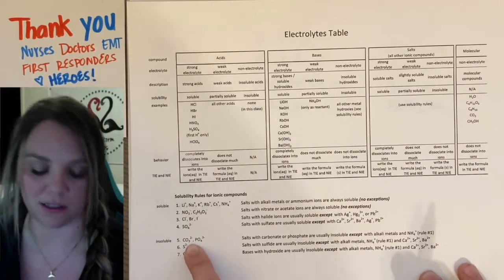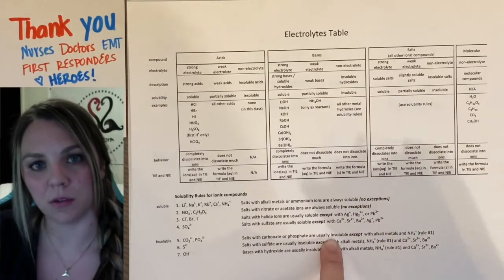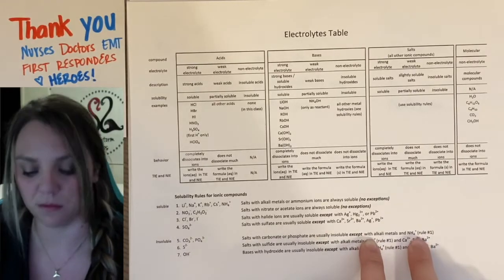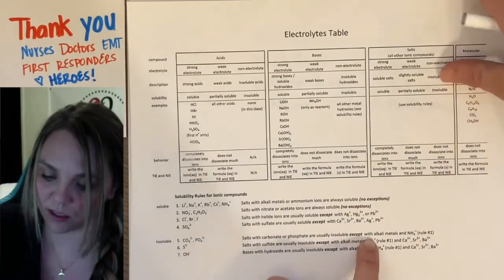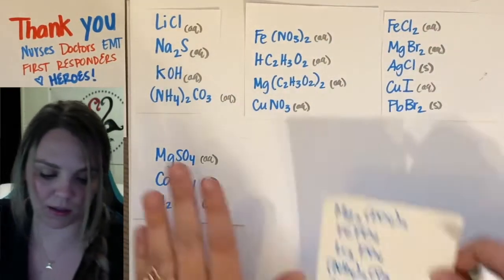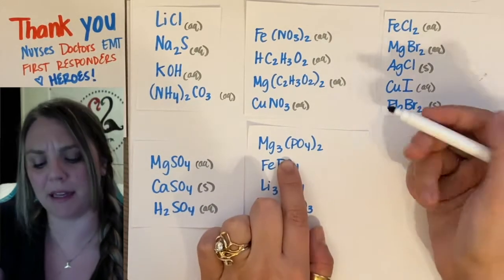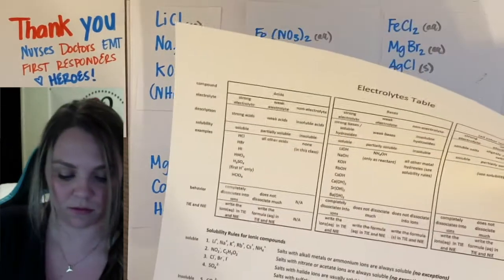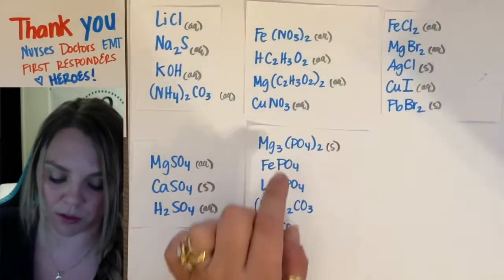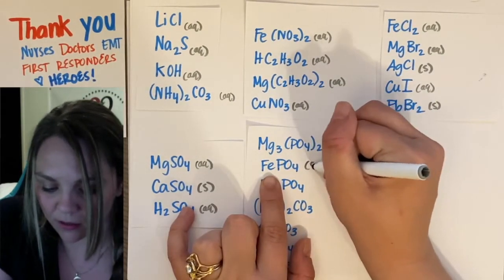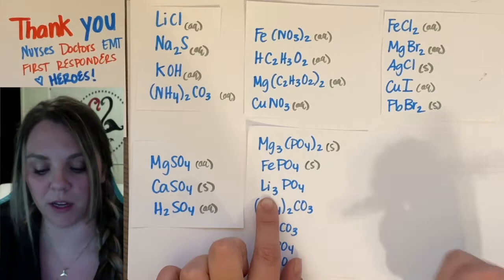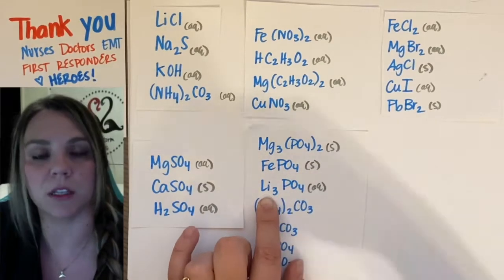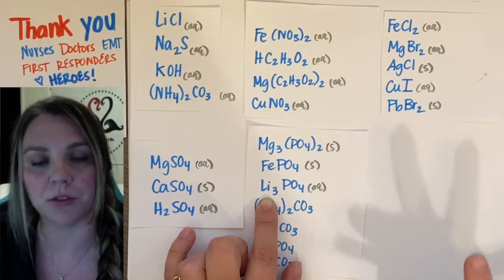So, carbonates and phosphates are usually insoluble. They're usually going to have an S for a solid unless they're bonded to alkali metals and ammonium. Well, this makes sense because this follows rule one. Let's take a look at this.